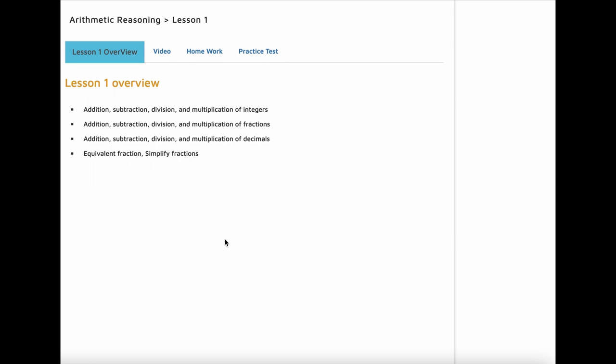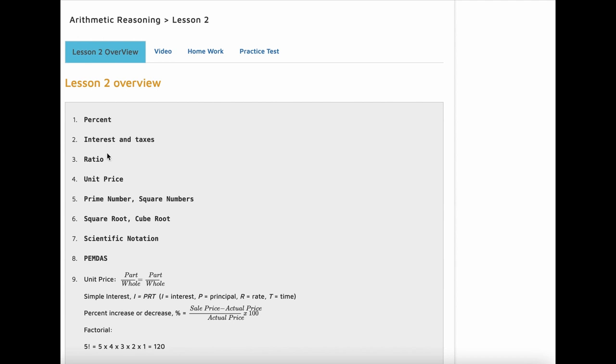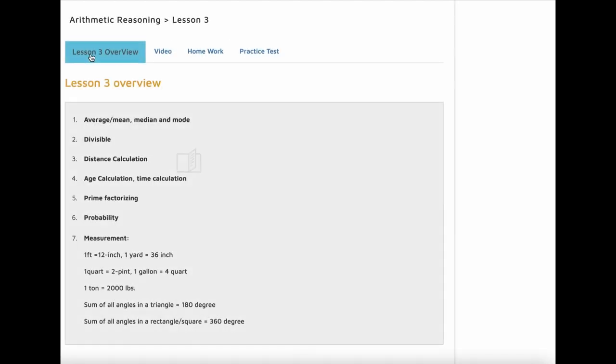The first thing you need to know how to do addition, subtraction, multiplication, and division for integers, fraction, and decimals. So make sure that you know how to do basic math. And another very important thing, make sure that you know your multiplication table. If you don't know the multiplication table, it will take longer time to solve the problem. And next you have to study percent, interest rate and tax, ratio, unit price, prime number, square numbers, square roots, cube roots, scientific notation, and PEMDAS. Next, make sure that you study average, mean, median, and mode. Distance calculation, speed calculation, time calculation, prime factorizing, probability, and different measurements.